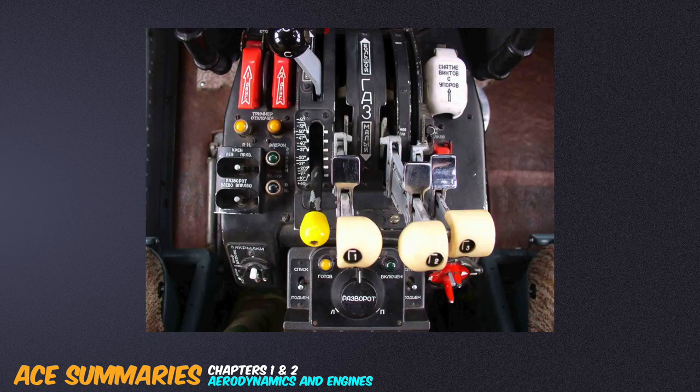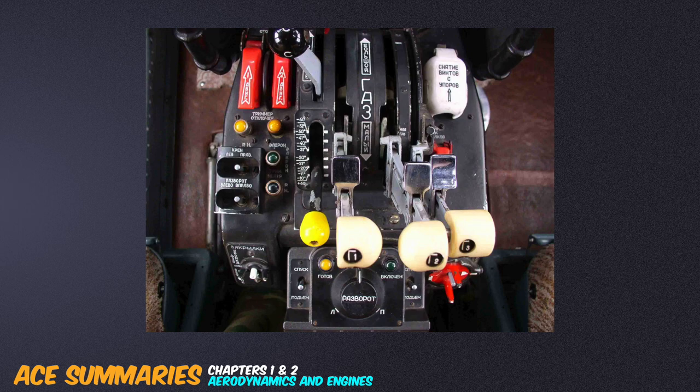If a jet engine thrust lever has a 10-inch range of motion, at the top of this range, a 1-inch movement of the lever will correspond to a greater thrust increase than a 1-inch movement at the lower end. This is because jet engines are designed to perform at high RPMs, with thrust increasing non-linearly in relation to the throttle lever.